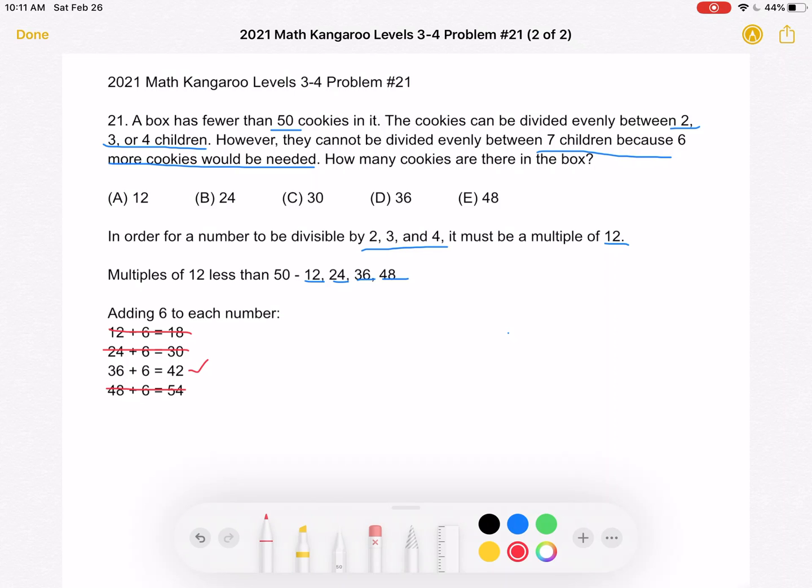So we know that the number of cookies in our box must be 36 because it is a number that is divisible by 2, 3, and 4. And if we add 6 more to it, we would get a number divisible by 7.